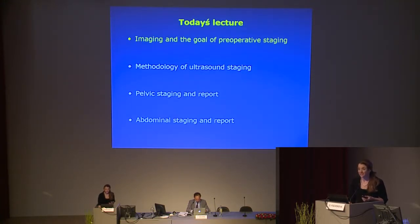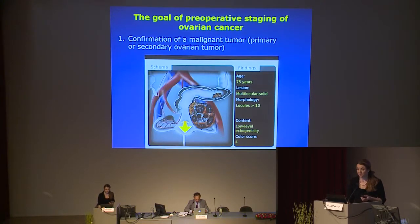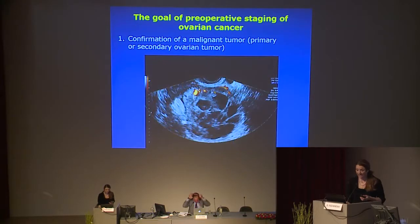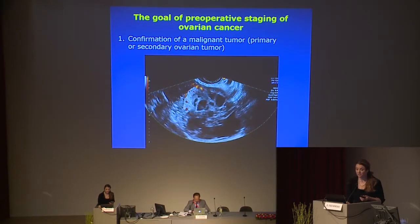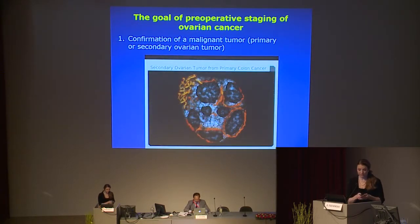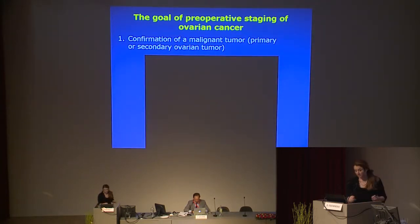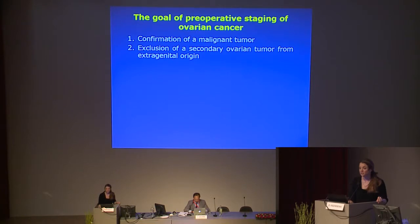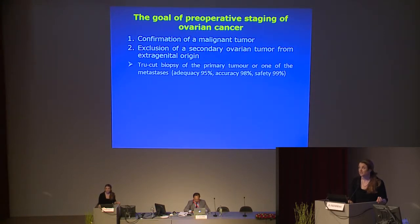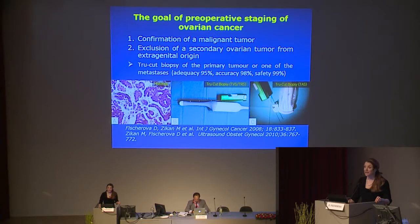What are the goals of staging and imaging? The first goal is to confirm the presence of a malignant tumor and to exclude that it is an extra-genital tumor — like in this case, a patient with a history of sigmoid colon who has a multilocular solid tumor with high perfusion in the solid portion. If you have a suspicion of extra-genital tumor, you may provide a site-specific diagnosis before surgery using a minimally invasive approach: the TruCAD biopsy guided by ultrasound with high adequacy, accuracy, and safety. However, you shouldn't puncture an early stage — always make the biopsy from an advanced tumor or metastatic lesion.